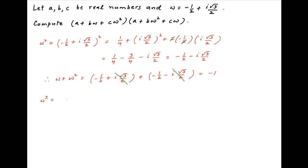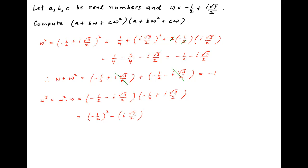Next, we evaluate omega cube. This is equal to omega square times omega. Using the result above, this is equal to minus half minus i times root 3 upon 2, multiplied by minus half plus i times root 3 upon 2. This equals minus half whole square minus i times root 3 upon 2 whole square, and since i square is equal to minus 1, this simplifies to 1 upon 4 plus 3 upon 4, which is equal to 1.